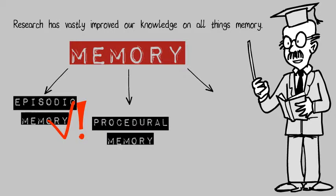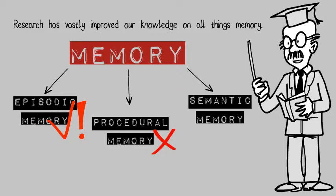The second is procedural memory, made up of habits, skills, and how to do everyday things — including things like riding a bike. However, procedural memory is barely affected. The last is semantic memory, reserved for facts and general knowledge such as colors and the president of the country. This, too, is usually rarely affected.